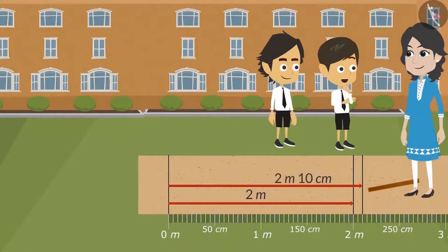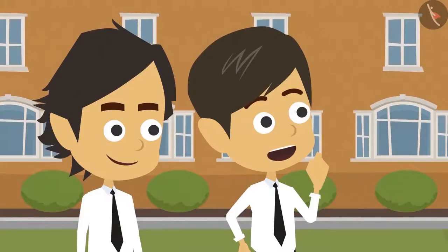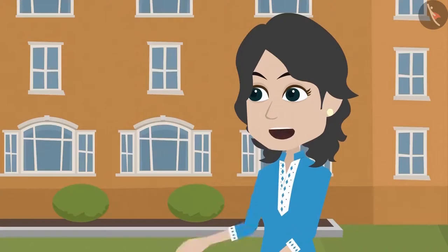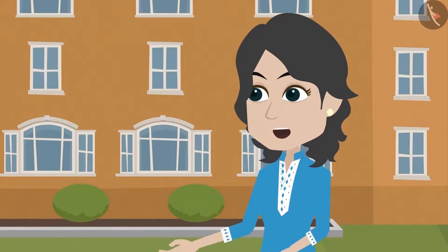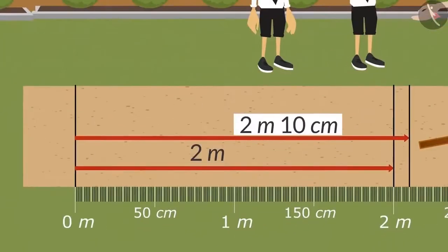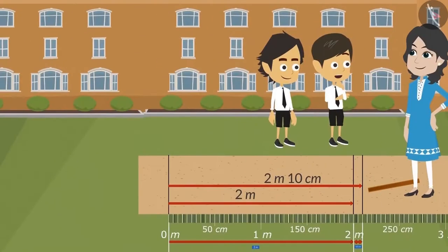2 meters or 10 centimeters? 2 meters and 10 centimeters. I didn't understand, ma'am — tell me either in meters or in centimeters. Hey Rayyansh, it is not necessary to tell length in just one unit of measurement. We can write it in two units of measurement as well. For instance, your long jump is 2 meters and 10 centimeters — this means that you have jumped a length of 2 meters and 10 centimeters. Okay, now I understand.